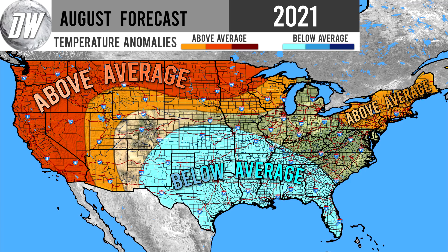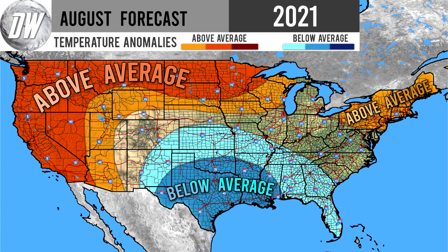We do expect some below normal temperatures for some of the south central and southeastern United States, and that's the first shade — lower confidence but we do expect below normal temperatures in general. We have a moderate shade of blue for Texas, Oklahoma, Arkansas, Mississippi, and Louisiana — that's where we expect below normal temperatures to be a little bit more likely for that south central region. This has also been very similar to how we've seen things go in June and July as well.